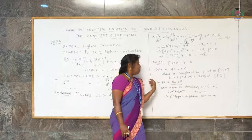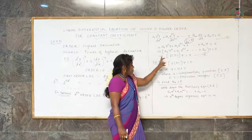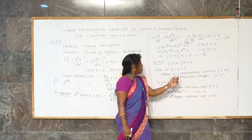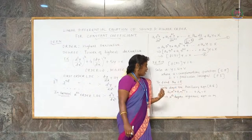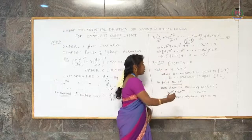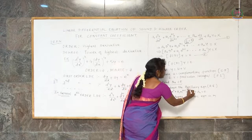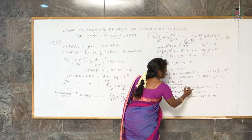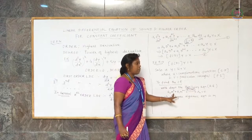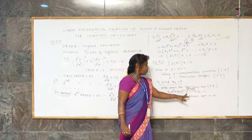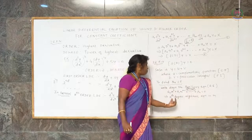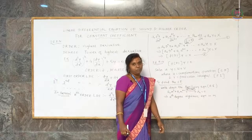To find the complementary function, the procedure is to take the right-hand side equal to 0 and write down the auxiliary equation. The auxiliary equation is written by replacing D with m and equating the function to 0. Therefore the equation becomes: a₀mⁿ plus a₁m^(n-1) plus ... plus aₙ equals 0, which is an nth degree algebraic equation in m.